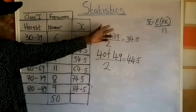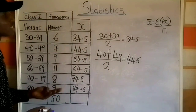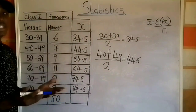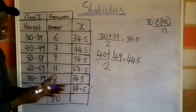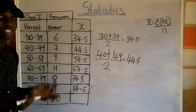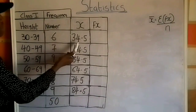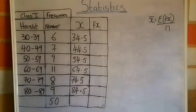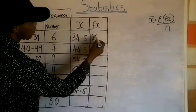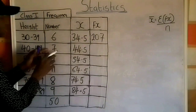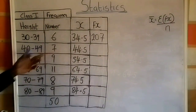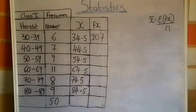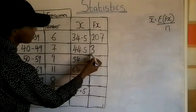I have gotten the frequency and x. From the formula I still need the value of fx, which is the multiplication of frequency and x. I multiply 6 × 34.5 = 207. For the next cell, 7 × 44.5 = 311.5.